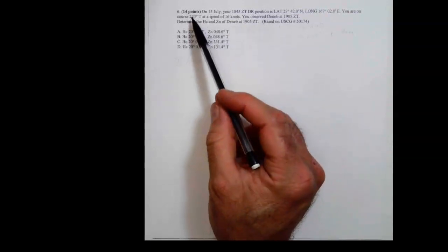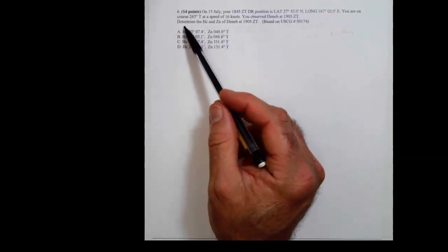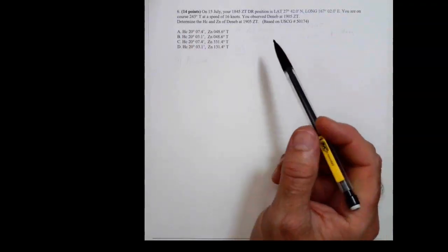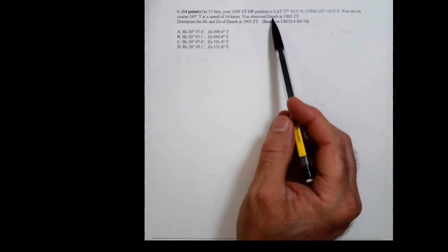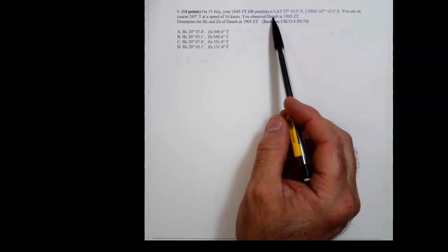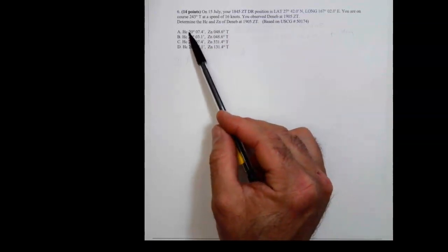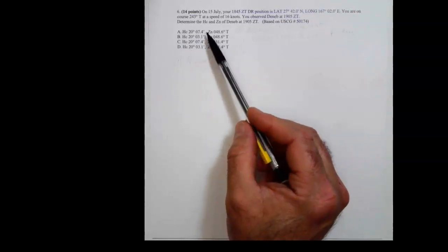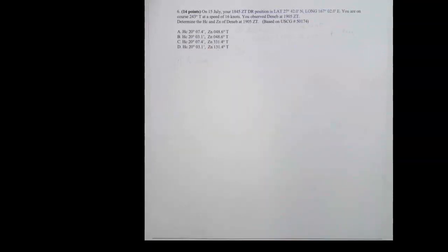Okay, in this video we're going to do this problem, which is number six on practice test two. But if you don't have practice test two, this is the problem we're doing. We're going to reduce a line for a star. In this problem, they're only asking us to calculate HC and Zn, not the intercept.